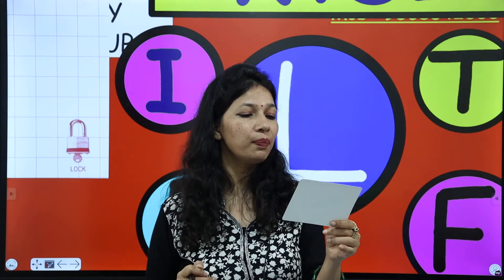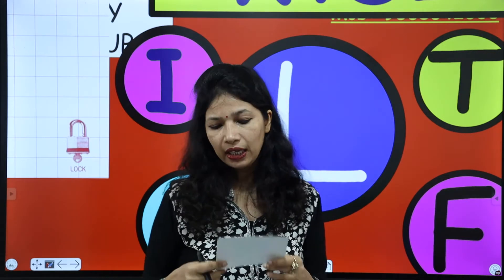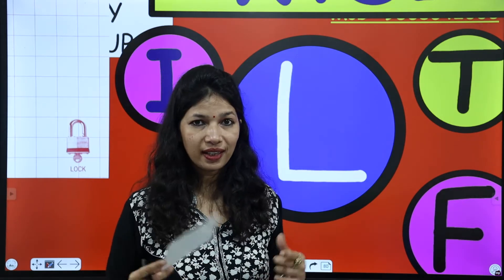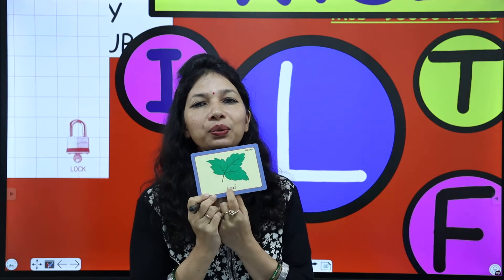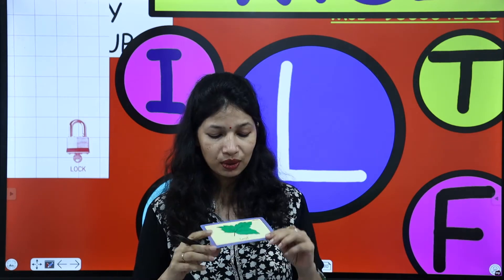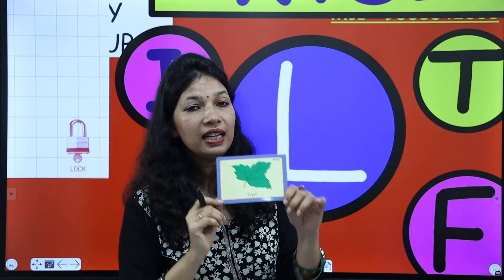Har trees ka important part hoti hai ye. Har tree par hoti hi hoti hai — ye sabse zyada dikhai deti hai, aur phir fruits us par lage dikhate dete hain. So this is leaf — kitna cute hai, beautiful hai na, green! Aankhon ke liye kitna soothing hota hai. L for leaf. Leaf starts with letter L.